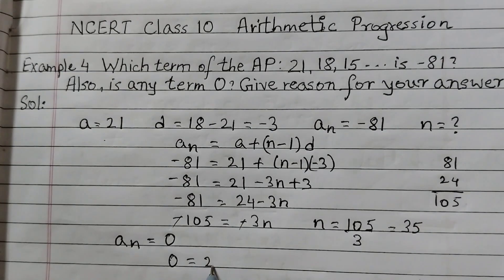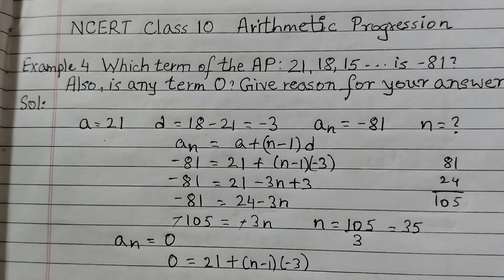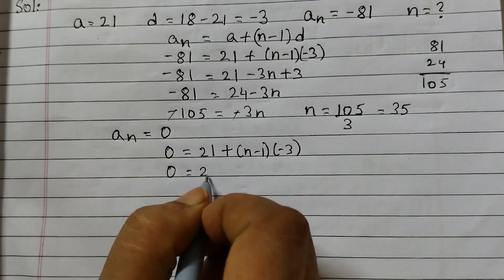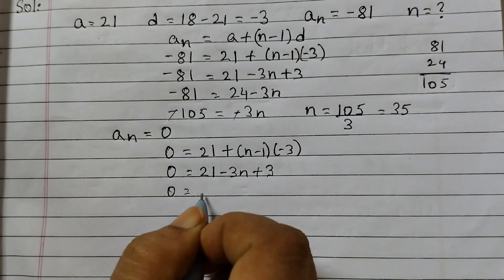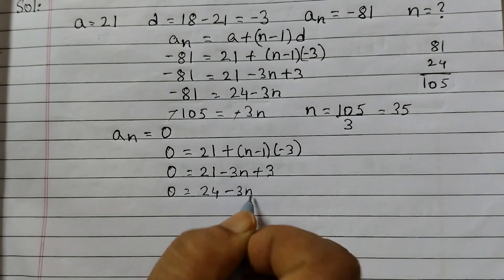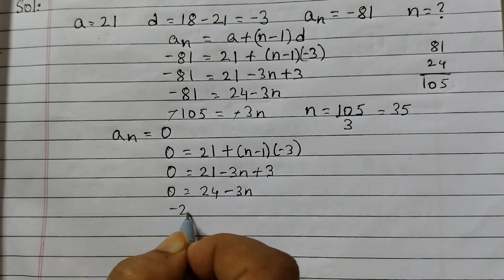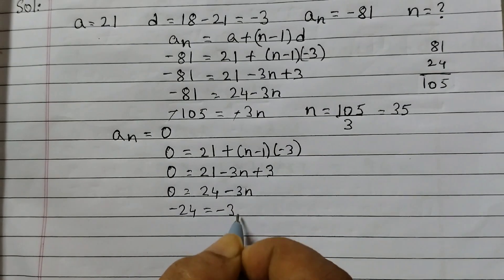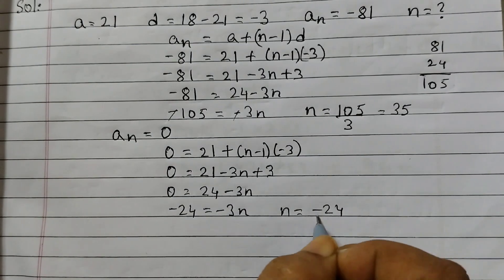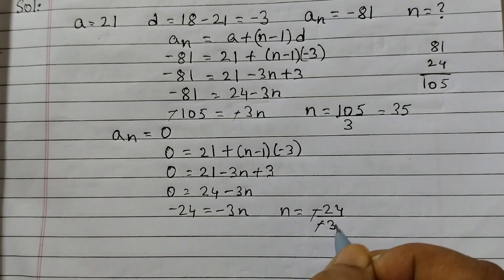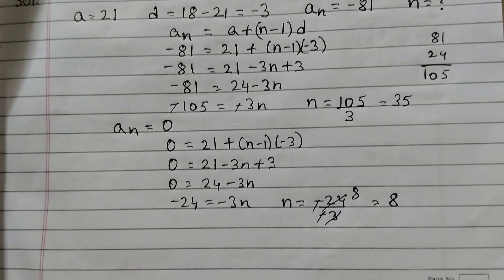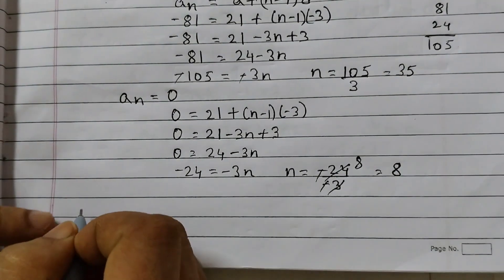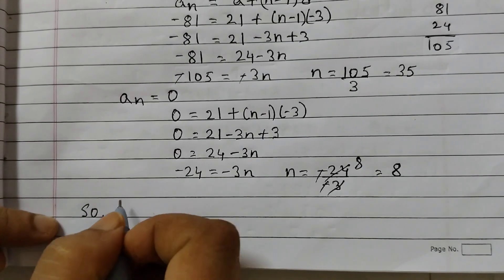So we write: 0 equals 21 plus (N minus 1) into minus 3, which gives 0 equals 21 minus 3N plus 3, so 0 equals 24 minus 3N. Taking 24 to the other side: minus 24 equals minus 3N, so N equals 24 divided by 3, which is 8. That means the 8th term is 0.